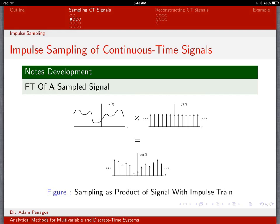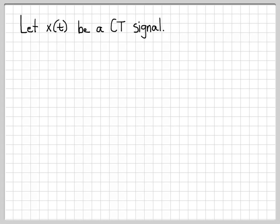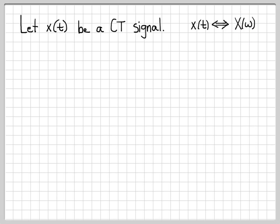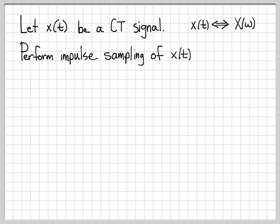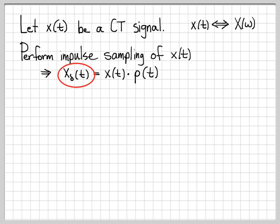What happens when we actually do this mathematically? Let x of t be a continuous time signal. If x of t is the time domain signal, it has a frequency domain representation x of ω — the Fourier transform of x of t. We are going to do impulse sampling, which means taking x of t and multiplying it by the pulse train p of t. This results in the impulse sampled signal x_δ(t).